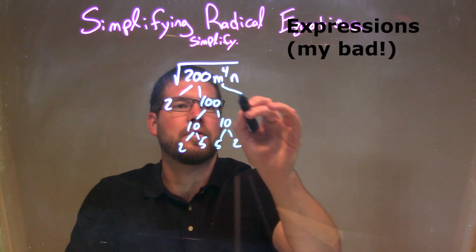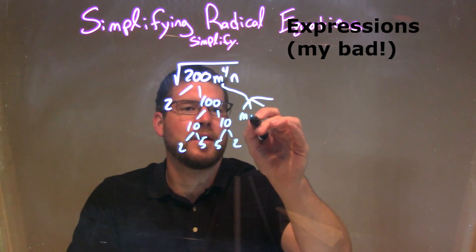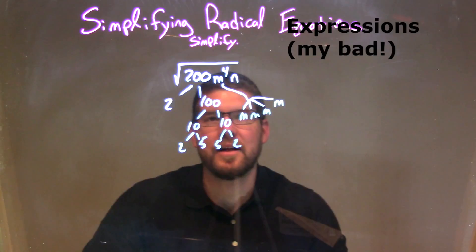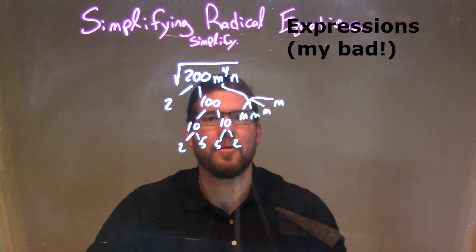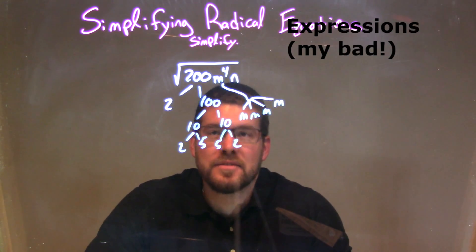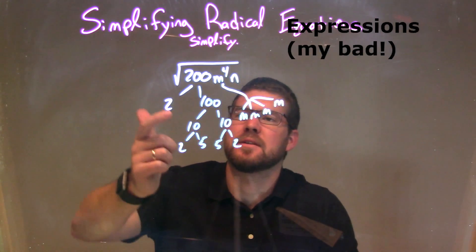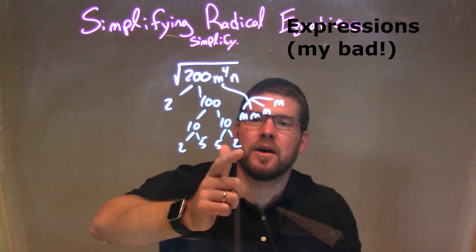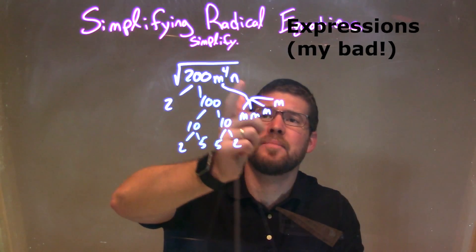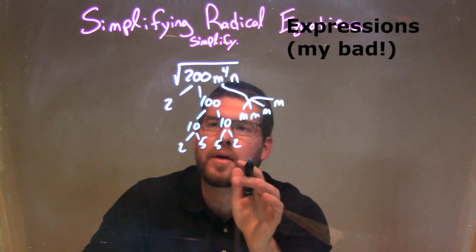m to the fourth, I'm going to break down to be m times m times m times m, and n is just by itself — that single n, it doesn't really break down. So now I've done a prime factorization of 200 m to the fourth times n, which is 2 times 2 times 5 times 5 times 2, times m times m times m times m, times that one n.